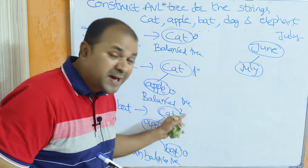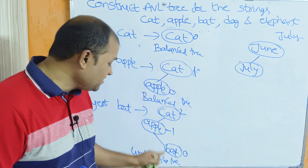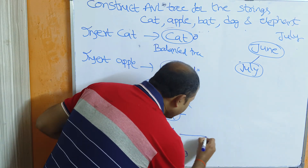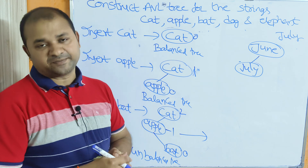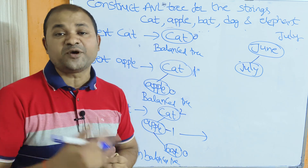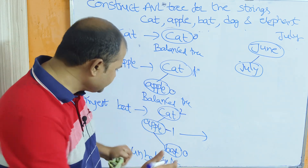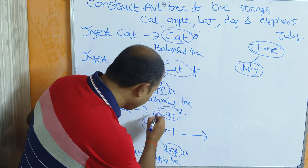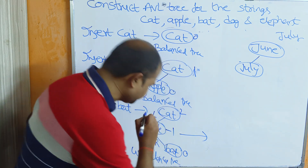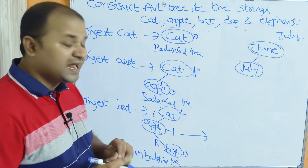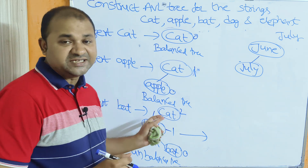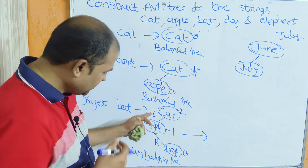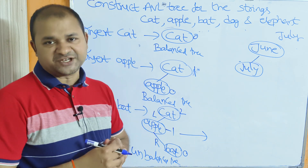Since the tree is unbalanced, we must make it balanced by performing the corresponding rotation. The insertion is in the left subtree's right child — this is an LR rotation. LR is a double rotation, so we perform a left rotation first, followed by a right rotation.